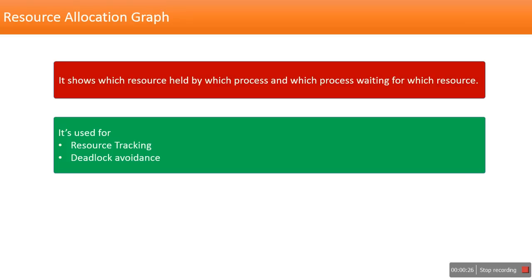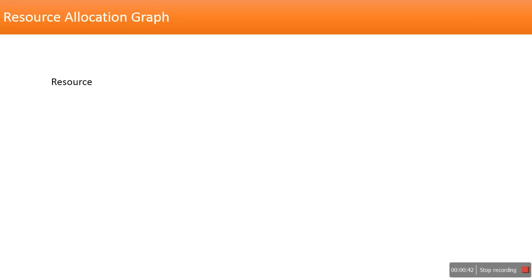The reason we use a resource allocation graph is for resource tracking — like how many resources we have, how many are allocated, and how many more are required for a process to complete its execution. It can also be used for deadlock avoidance.